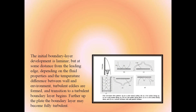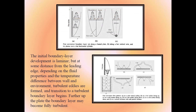The initial boundary layer development in free convection is laminar, but at some distance from the leading edge, depending on fluid properties and wall-environment temperature difference, turbulent eddies form and transition begins. Further up the plate, the boundary layer may become fully turbulent. Free convection boundary layer patterns are observed across heated plates, a hot vertical wire, over a hot horizontal cylinder, over cold vertical surfaces, on hot or cold surfaces facing up or down, and in vertical enclosures with cold parallel surfaces.